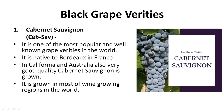Now we move to black grape varieties. The first and most important is Cabernet Sauvignon — sometimes shortened to Cab Sav. It is one of the most popular and well-known grape varieties in the world, native to the Bordeaux region of France. Very good quality Cabernet Sauvignon is also grown in California and Australia. Similar to Chardonnay, Cabernet Sauvignon is very versatile and can be grown in different regions and climates around the world.